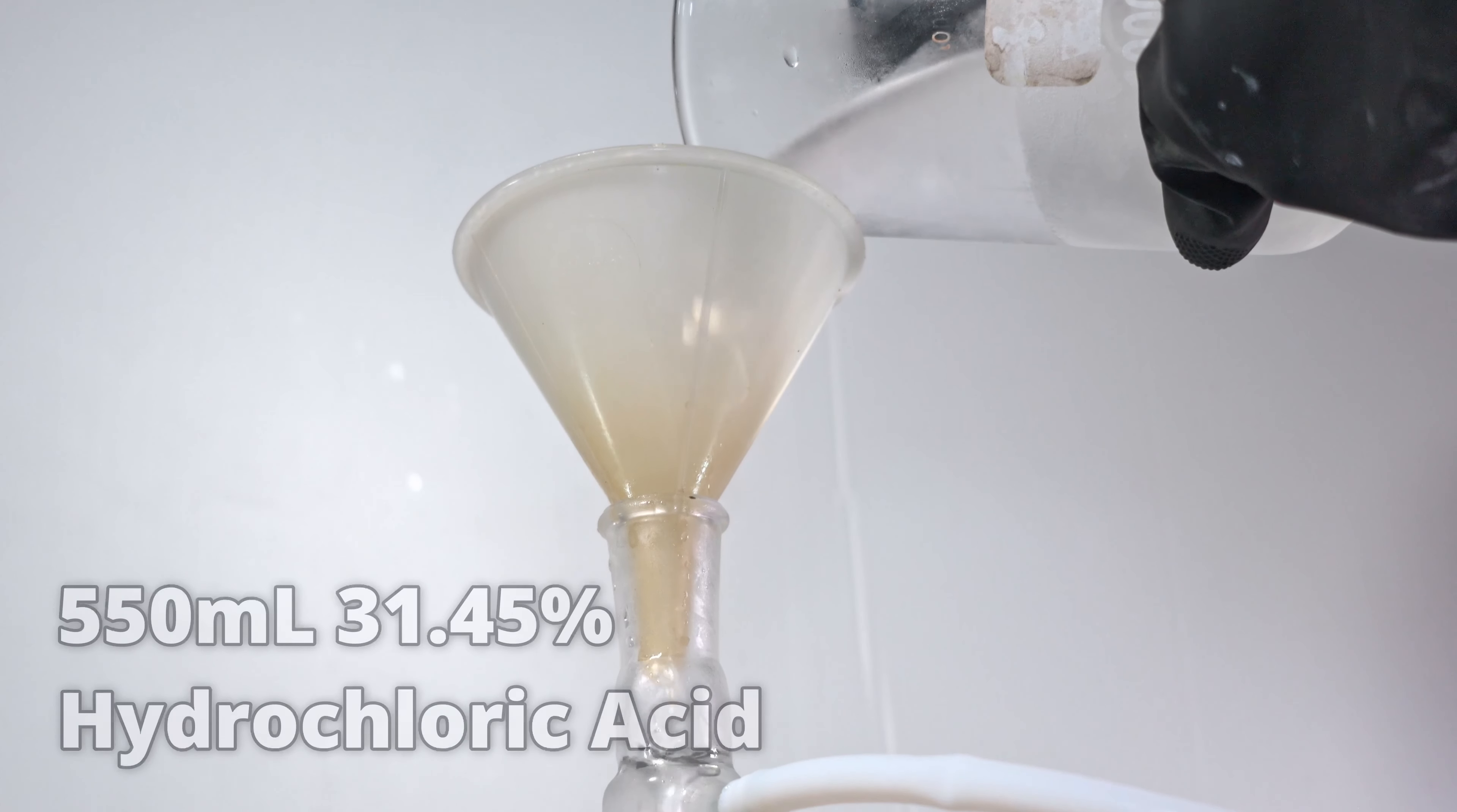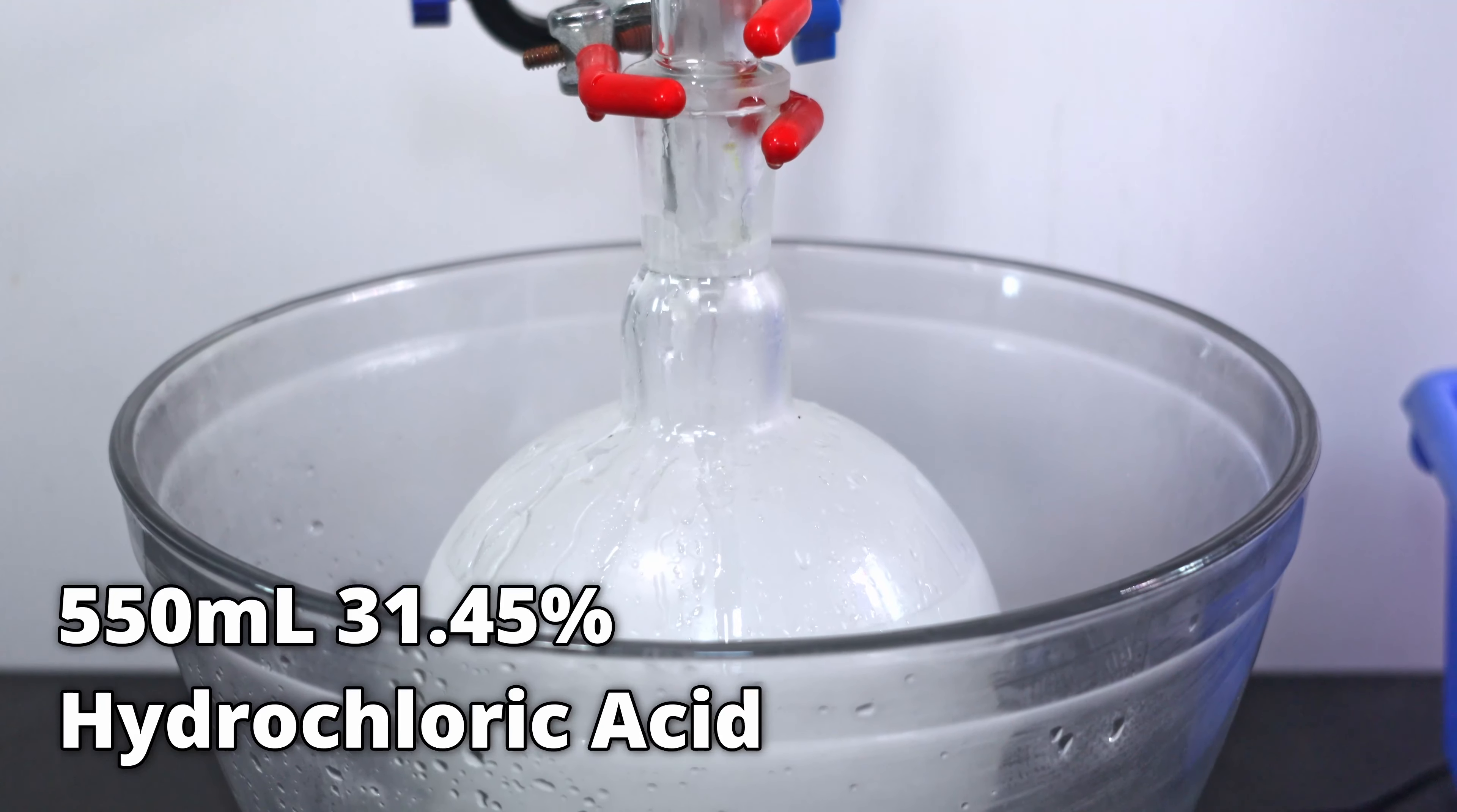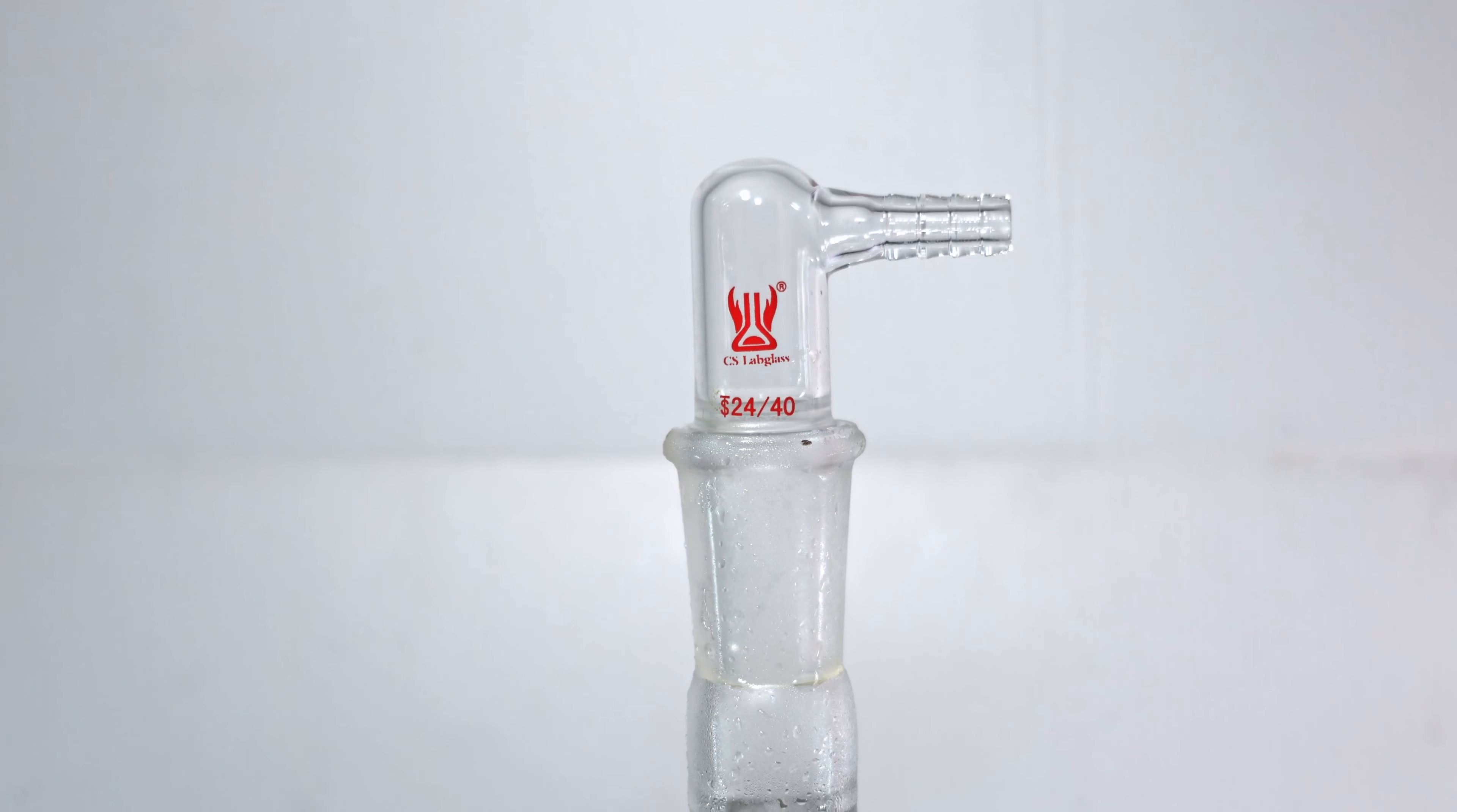Finally, I'm going to put in 550 milliliters of 31.45% muriatic acid. It is important that it be freezed so the reaction proceeds only through SN1. The low temperatures also inhibit hydrolysis of the tert-butyl chloride. After adding it all, I cap it with a vacuum adapter.